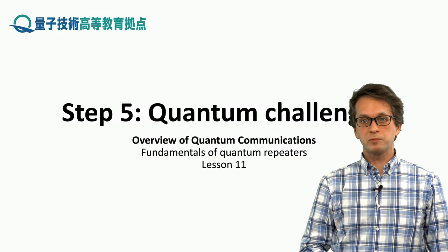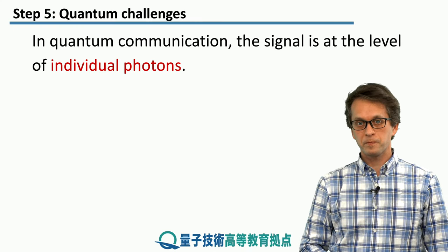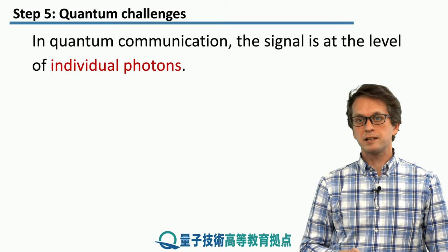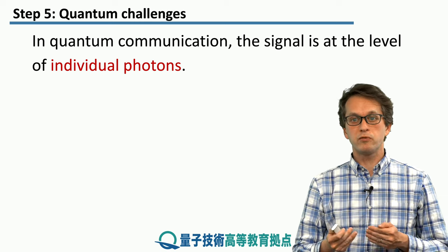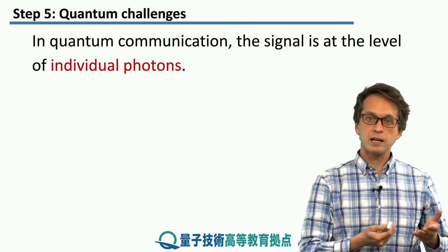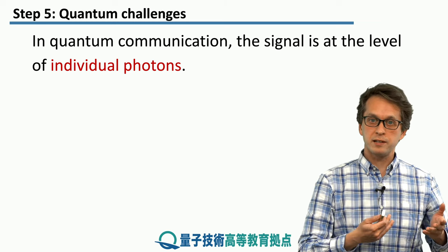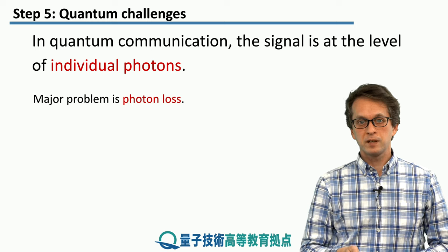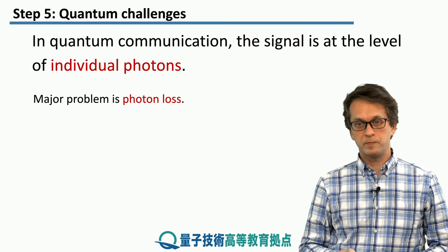Step 5: Quantum challenges. In quantum communication, the signal is at the level of individual photons, which is very different from classical communication where we are sending many, many photons. So the major problem becomes photon loss in the fiber.